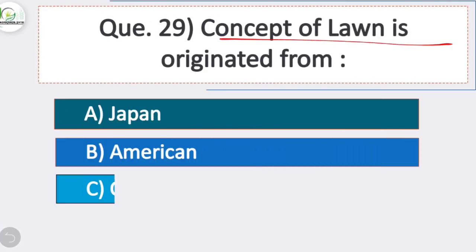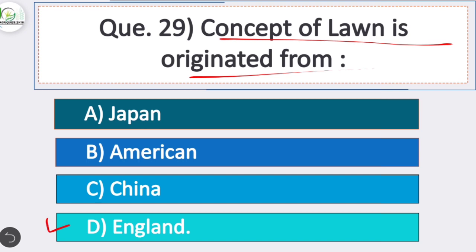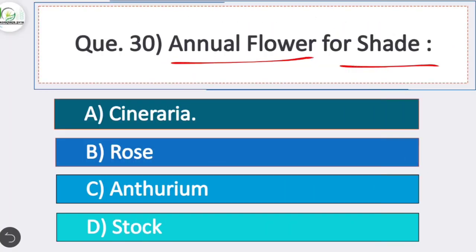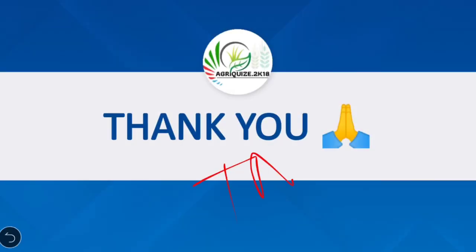Question 29: Concept of lawn is originated from — option D is correct — England. Question 30: Annual flower for shade. Thank you friends for watching our video. Please like, share, and subscribe to our YouTube channel for more videos.